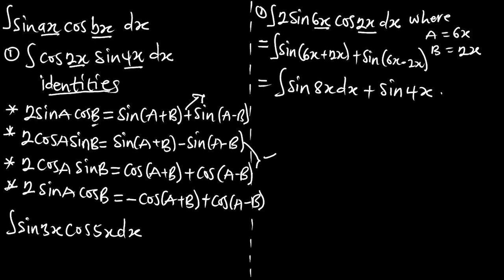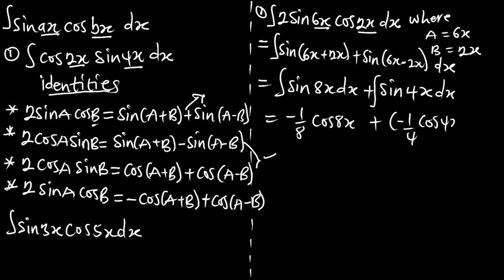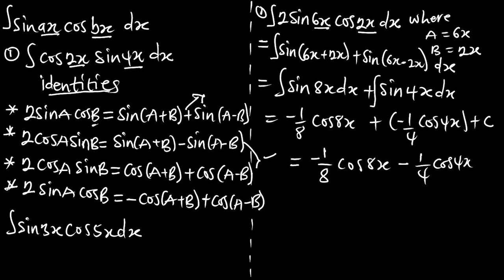We apply the integral to each term with respect to x. The integral of sin(8x) gives us negative 1/8 cos(8x), and the integral of sin(4x) gives us negative 1/4 cos(4x). So the answer is negative 1/8 cos(8x) minus 1/4 cos(4x) plus C.